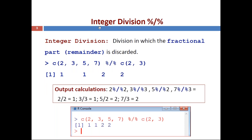We will see the first one: integer division. This operation is denoted by the symbol percentage-slash-percentage. Between the operand values you use this symbol and the result is the integer division. Integer division is division in which the fractional part — that is, the remainder — is discarded. It takes only the quotient value.